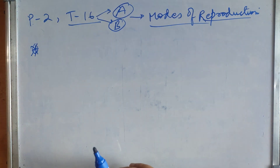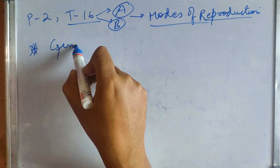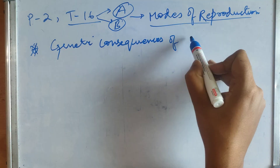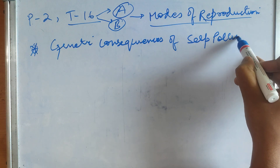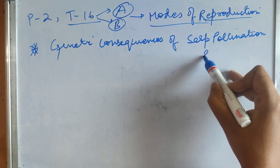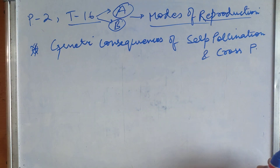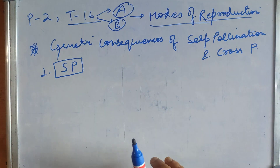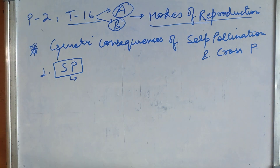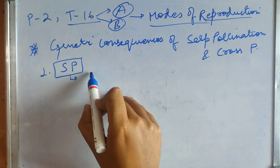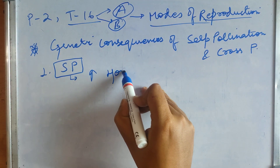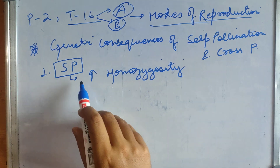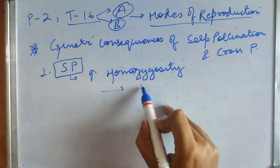The first topic of this session is genetic consequences of self-pollination and cross-pollination. Starting with self-pollination: self-pollination leads to a very rapid increase in homozygosity. Self-pollinated species are therefore highly homozygous.